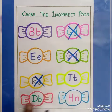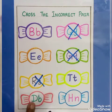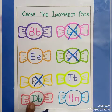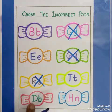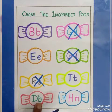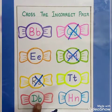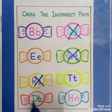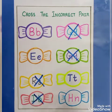Next one. This is capital letter D. This one is small letter B. This pair is correct? No, no. Put cross.